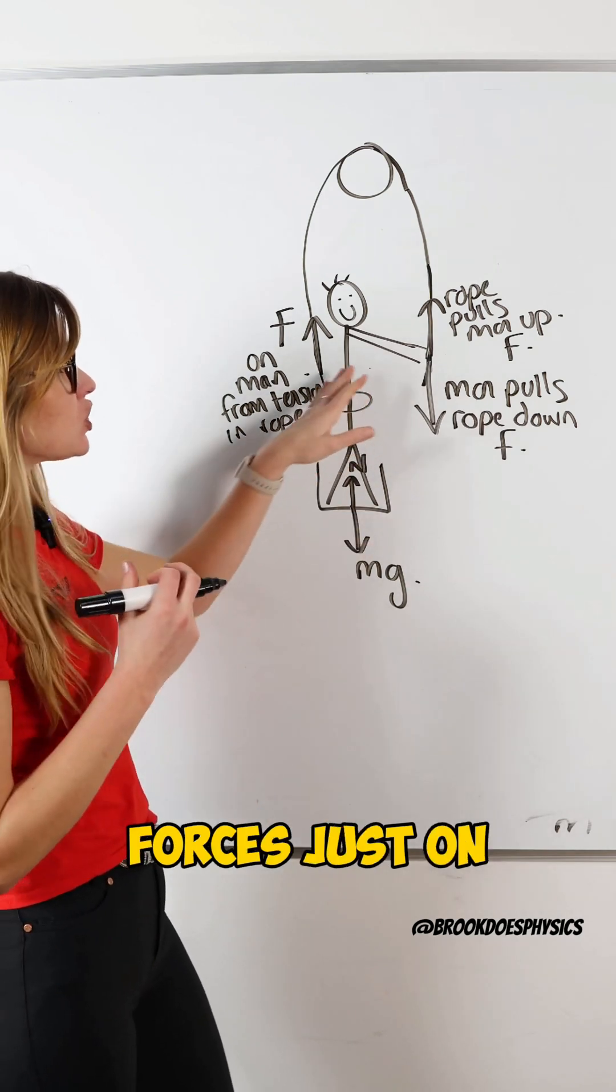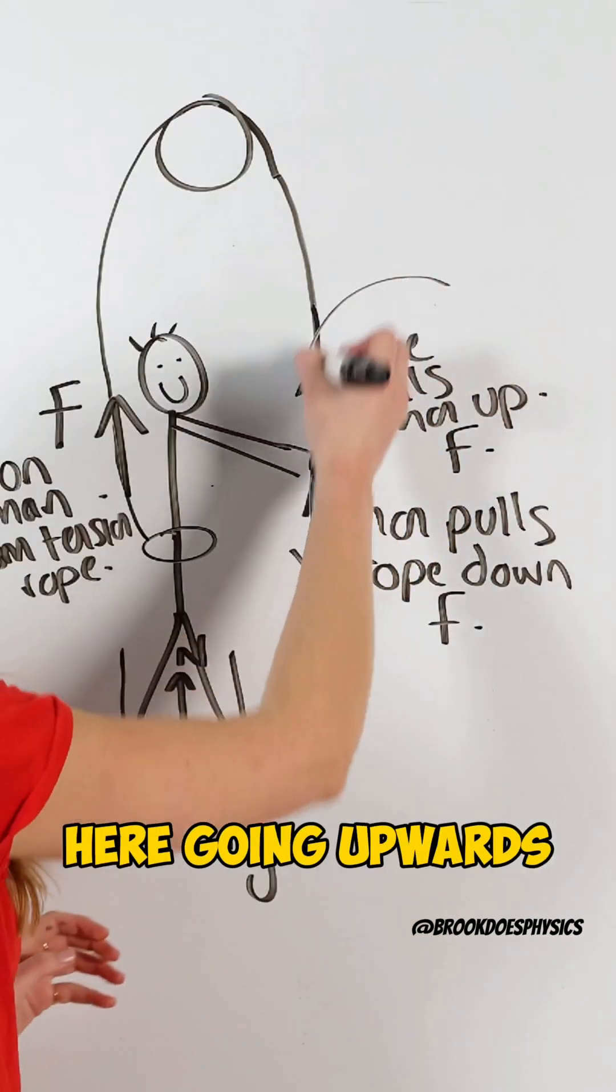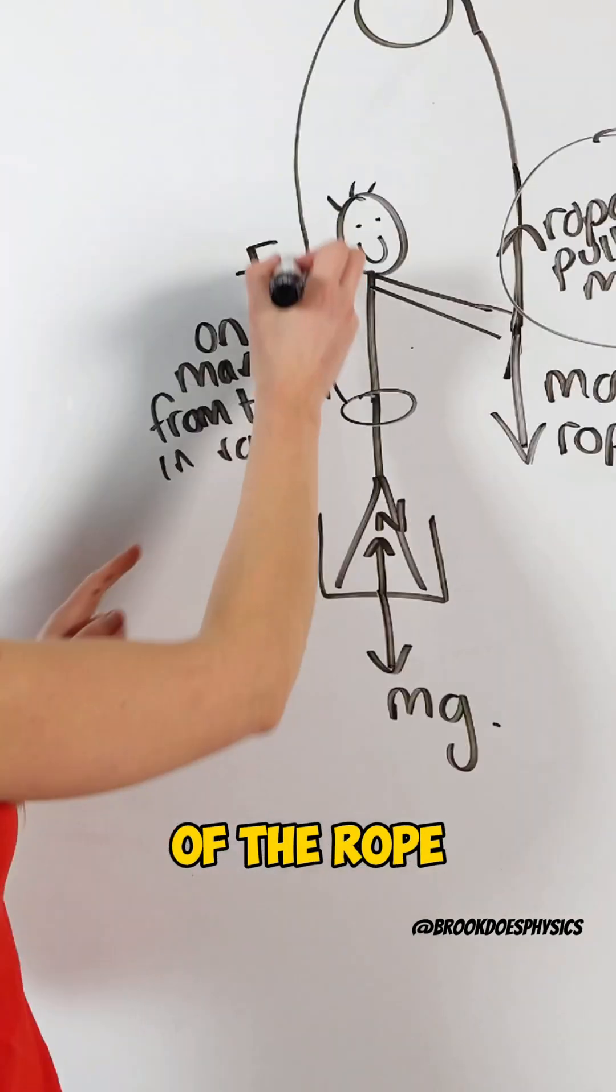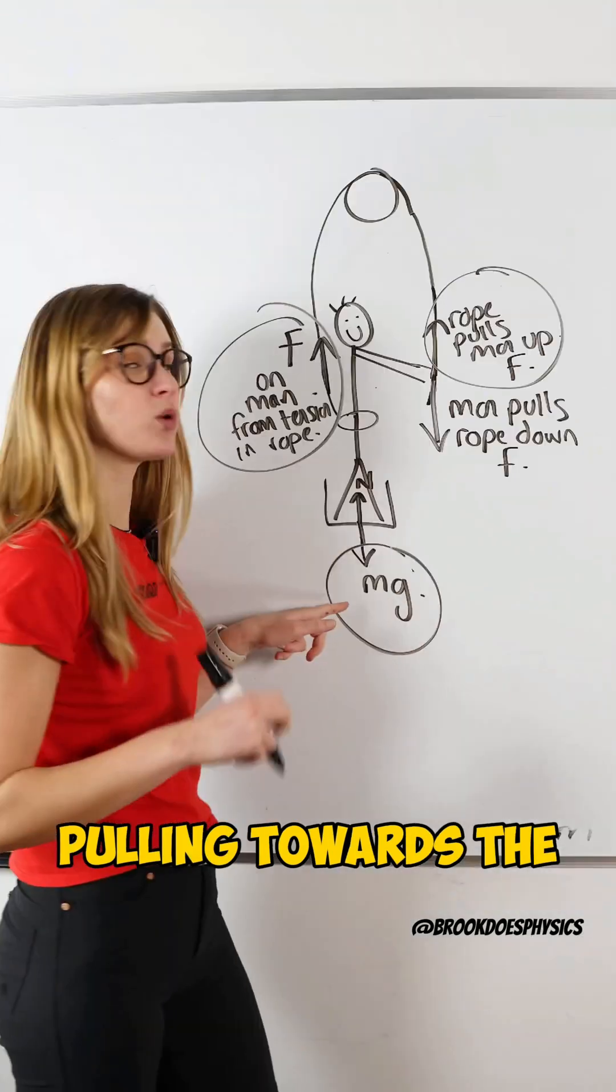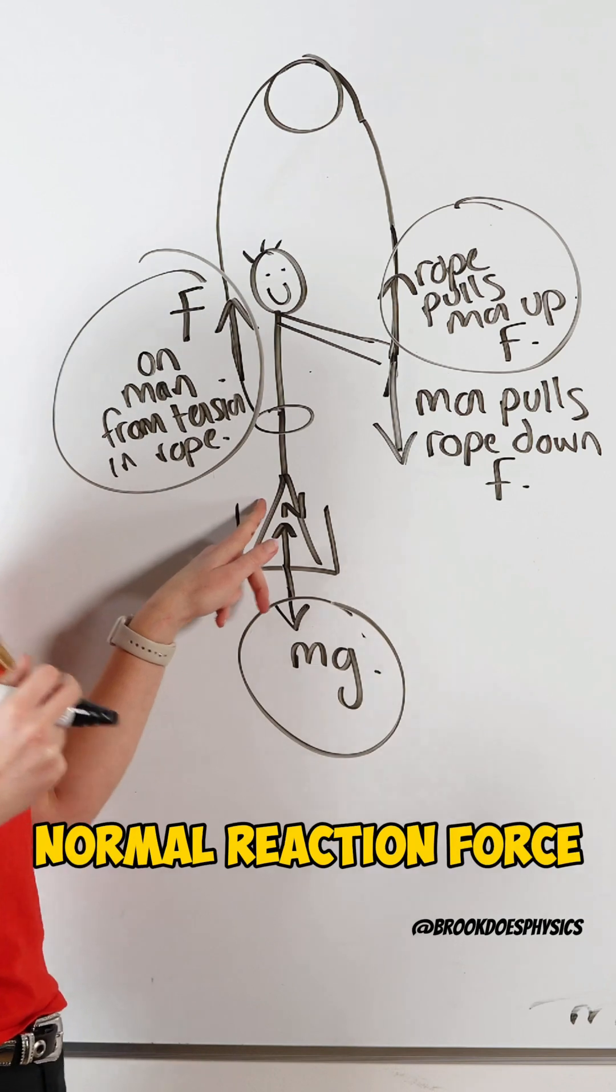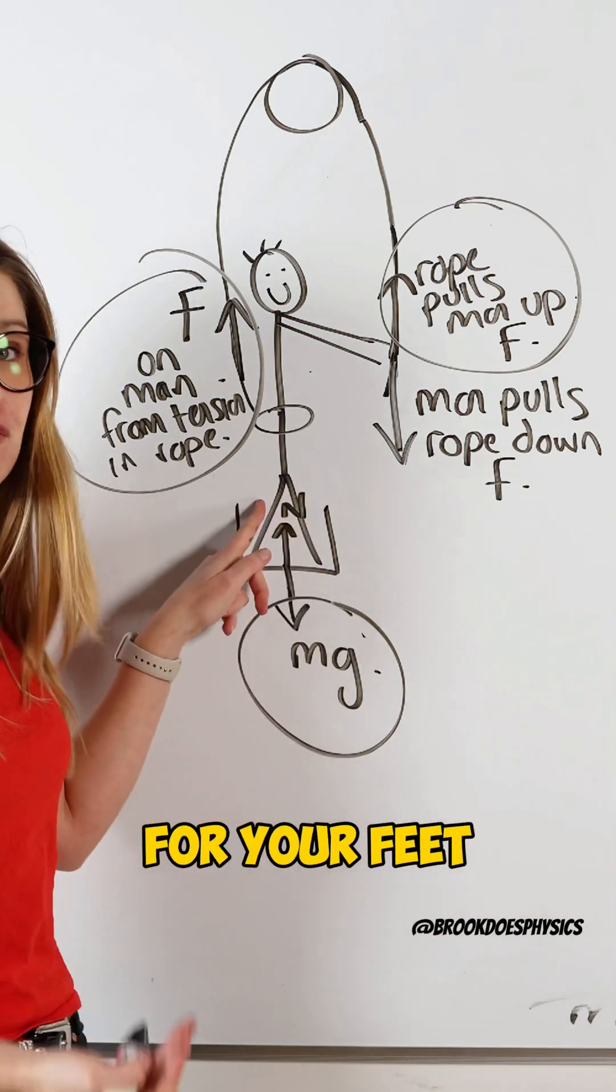So if I look at the forces just on the man, I've got the force here going upwards. I have a force here from the tension of the rope going upwards, the force here due to his weight pulling him towards the center of the earth, and here is the normal reaction force, which is the force from the ground on your feet.